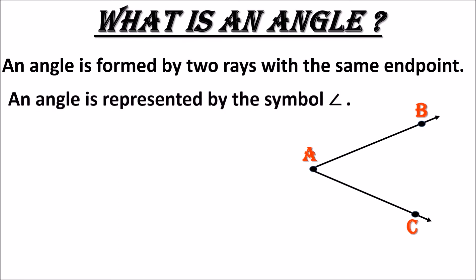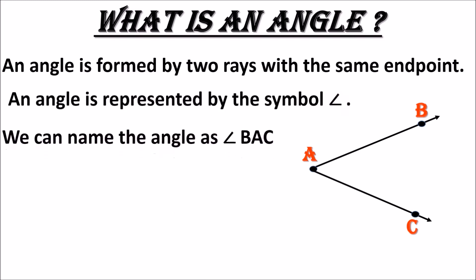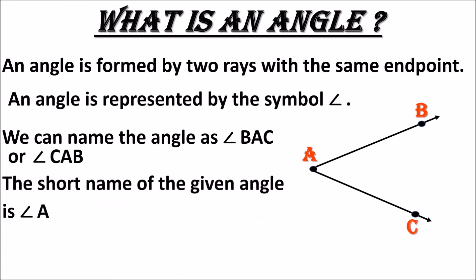An angle is represented by a symbol. This is the symbol of an angle. If you want to represent an angle, you have to use this symbol. We can name the angle as angle B, A, C — or angle C, A, B. The short name of the angle is angle A. Note that the angle is forming at point A — at the common end point.